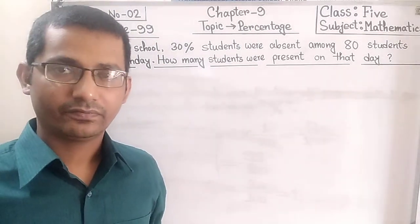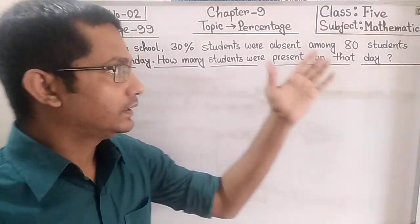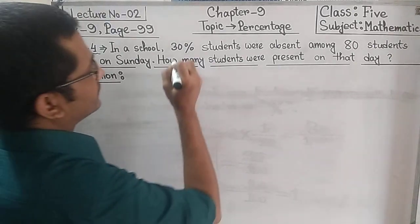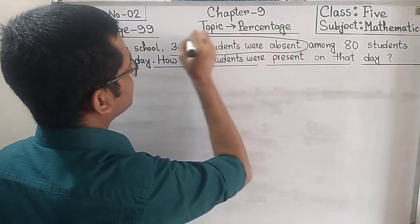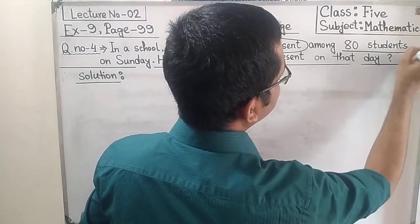If you read this question very carefully, then you will get 2 important information. The first one is 30 percent students were absent, and the second one is 80 students. These 80 students actually means the total number of students.